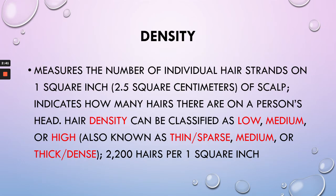Density is the number of hairs per square inch. The average number of hairs per square inch is 2,200. Density comes in three categories: low, medium, and high — also known as thin or sparse, medium, and thick or dense. So how much hair can you grab? That's density. Texture refers to the individual hair strand.